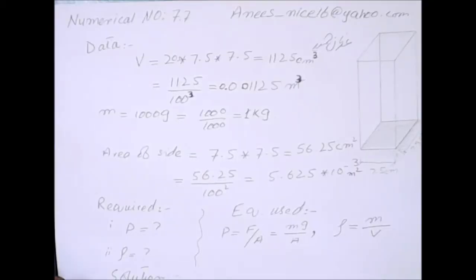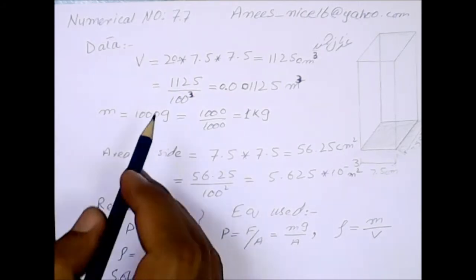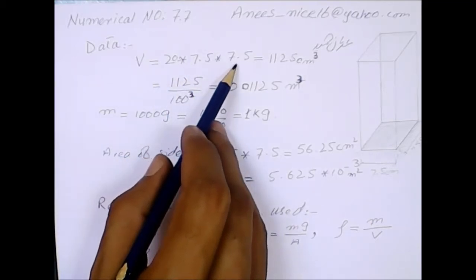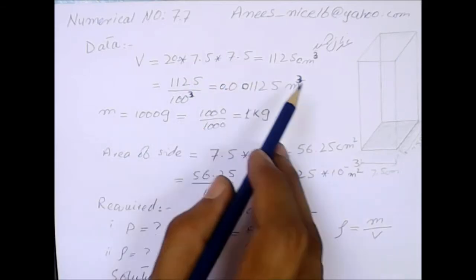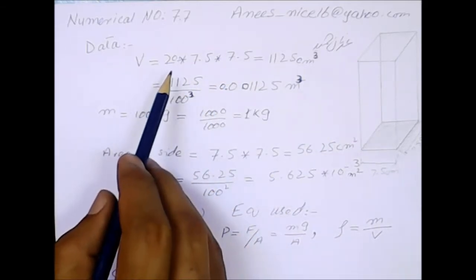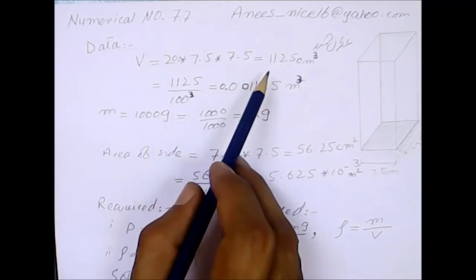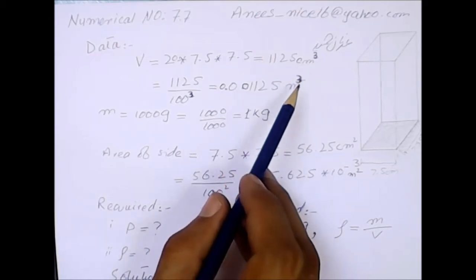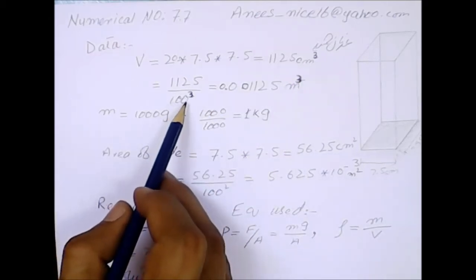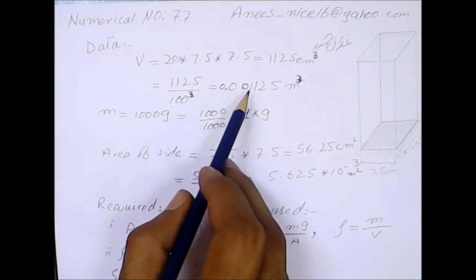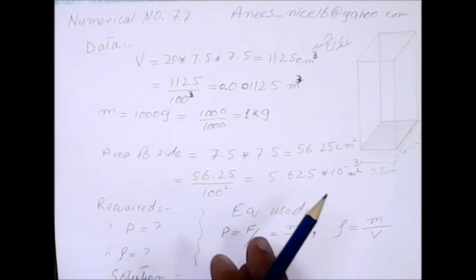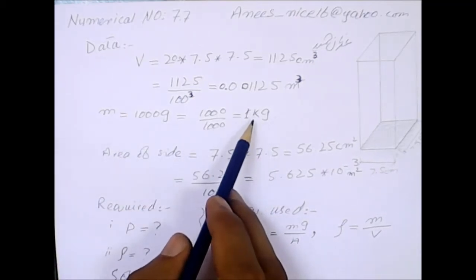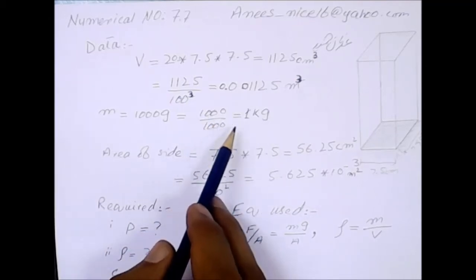In this numerical we have a wooden block with dimensions 20 cm, 7.5 cm, and 7.5 cm, standing vertically along the length. The volume is found by multiplying dimensions, giving 1.125 cm³, which converts to 0.001125 m³ or 1.125 × 10⁻³ m³. The mass given is 1000 grams, which converts to 1 kilogram.